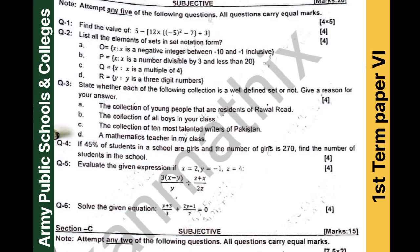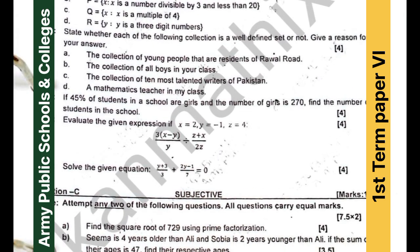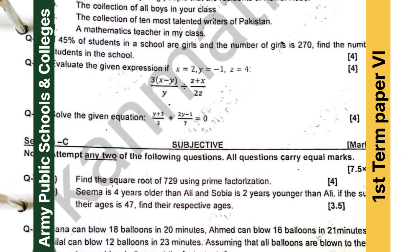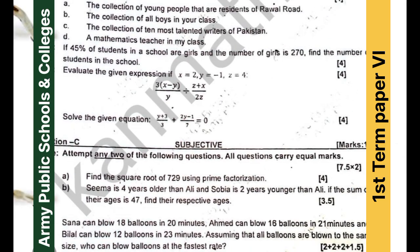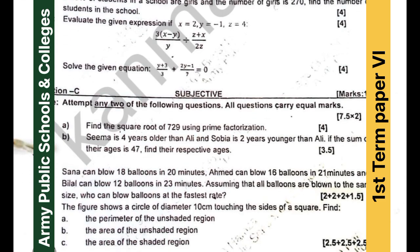Question number three is again from sets — you have to identify whether it is a well-defined set or not. Question number four involves percentages: 45% of students in a school are girls and the number of girls is 270 — find the total number of students. You must practice this type of percentage question for your first term exam. Question number five is a simple one from chapter four — solve the given equation.